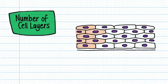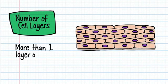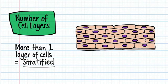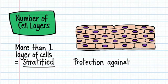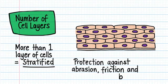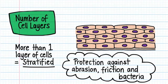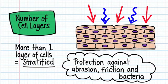If more than one layer of cells is present, we call the epithelium stratified. Stratified epithelium is located in regions where we need protection against abrasion, friction or bacteria, like for example, the skin.